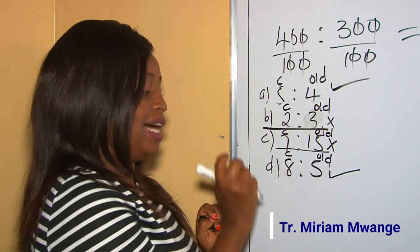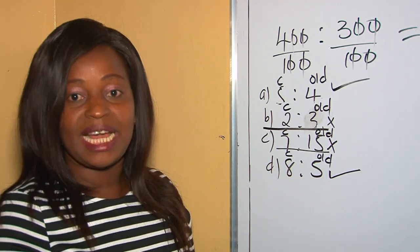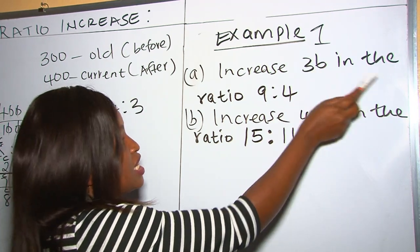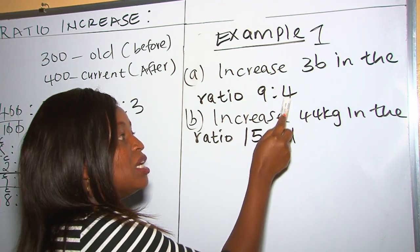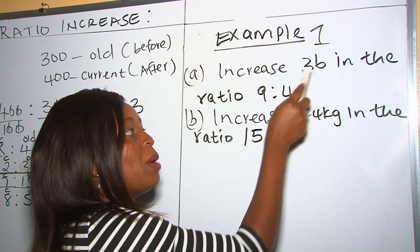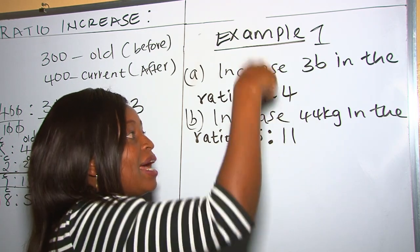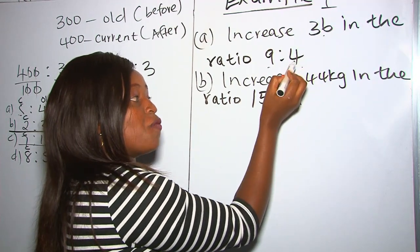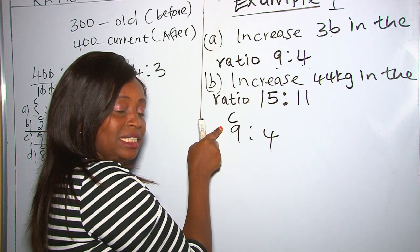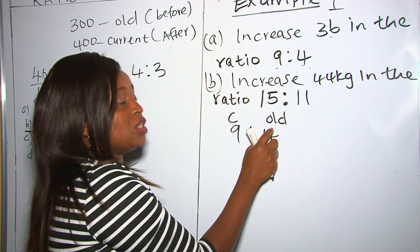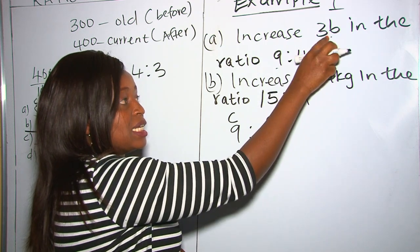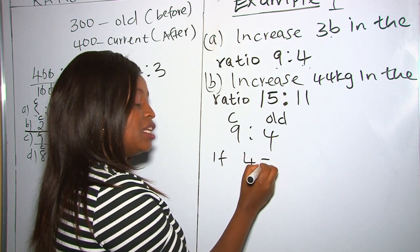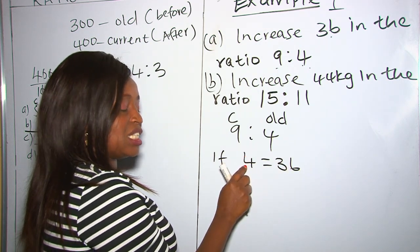Now let's proceed and work out our first example. We are told: increase 36 in the ratio 9 is to 4. So 36 is our lower number and we want to make it go higher. According to the ratio, 36 corresponds to 4 which is the old one. We are looking for the current value. So if our old value is 4 and it equals 36, then 4 is equal to 36.